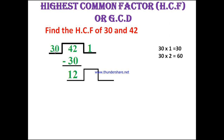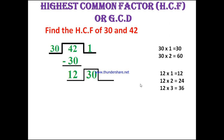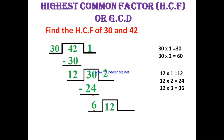Now this divisor 30 is becoming the dividend. We check: in 30, how many times does 12 go? Two times — 2 times 12 is 24. We write 2 in the quotient place and write the product 24 down, subtracting from 30 to get remainder 6.